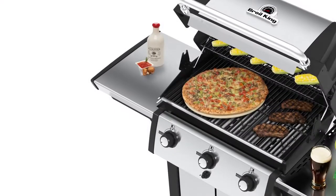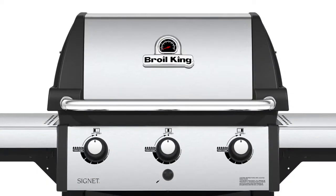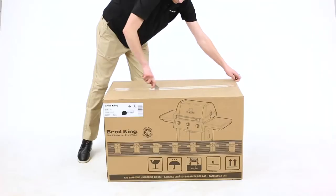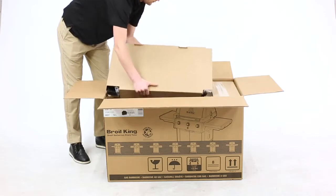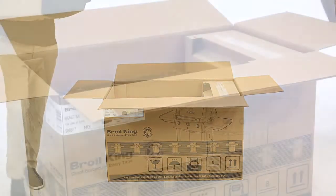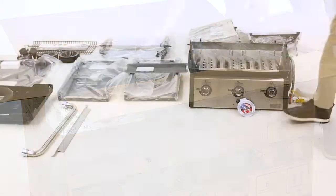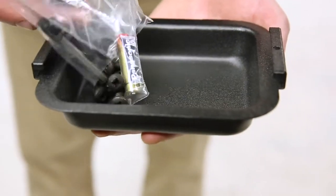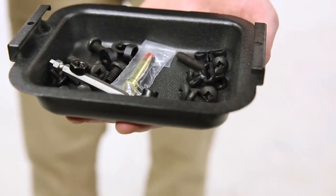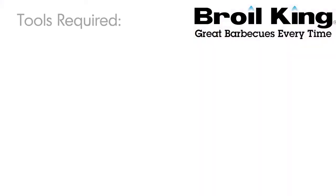Welcome to the assembly video for your Brawlking gas grill. Please use this video as a companion to your assembly manual. Before starting, unpack all of the components of your barbecue and lay them out in your workspace. Use the drip pan to hold the contents of the hardware bag.